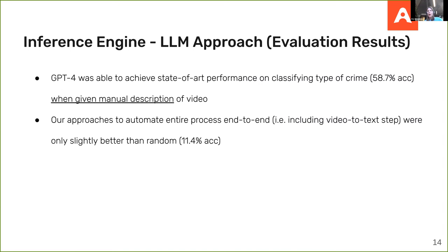With the manual descriptions, GPT achieved good performance — 58% accuracy — which isn't bad considering there were 13 categories, and even as a human I struggled sometimes. Unfortunately, when we tried to automate the entire process end-to-end, including an automated video-to-text step, we weren't able to perform much better than random.